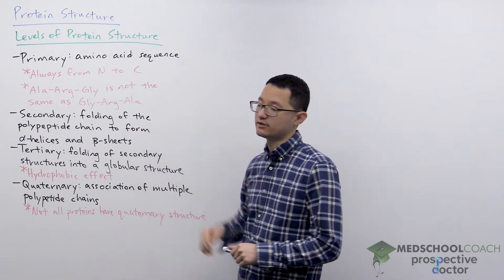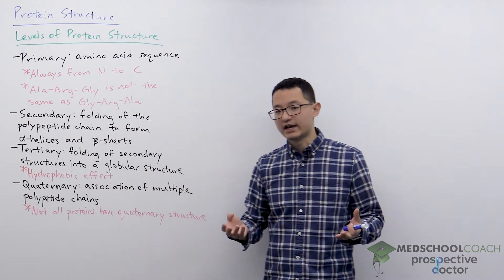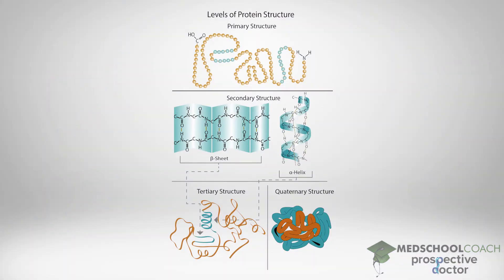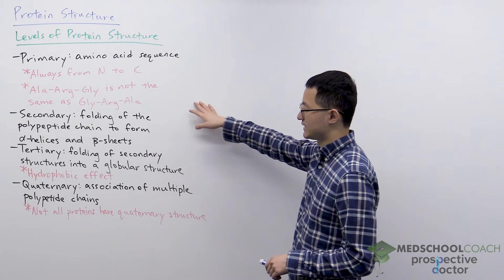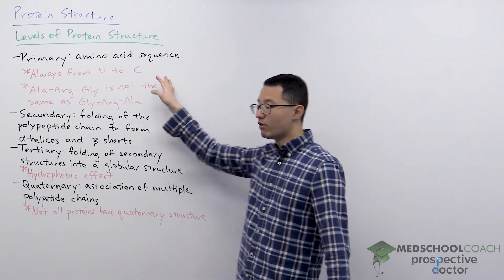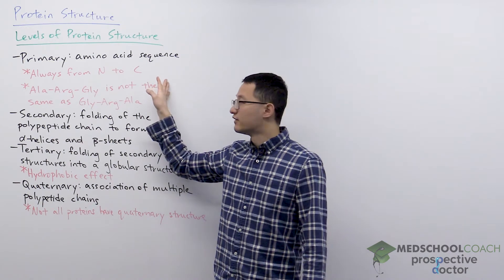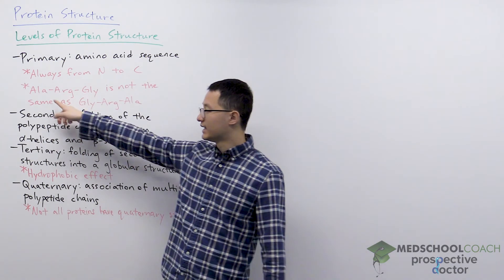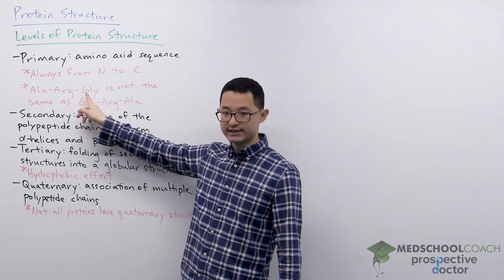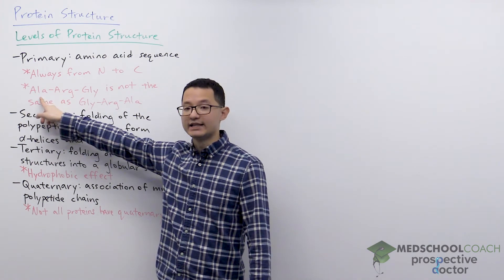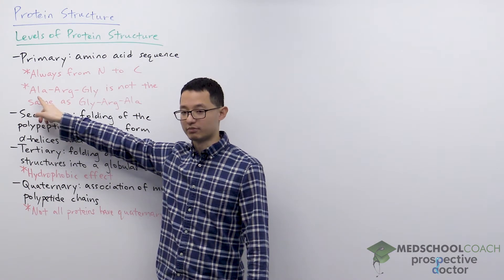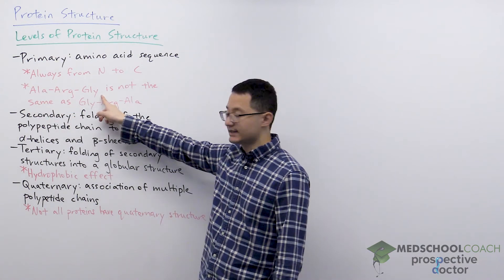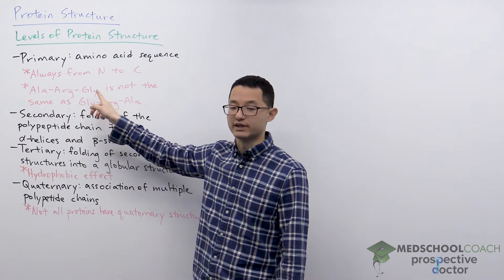Primary structure is the amino acid sequence. As you can see in this diagram, primary structure is essentially just looking at a polypeptide chain and the specific sequence of the amino acids. The amino acid sequence is always given from N to C in terms of order. So if they give you the peptide alanine, arginine, glycine, that means alanine has the N-terminus — its amino group is free — whereas glycine is the C-terminus, so its carboxyl group is free.